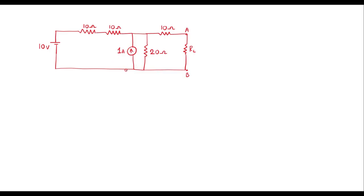Thevenin's equivalent circuit is always calculated at the terminals where the load resistor is connected. Here, the load resistor is connected at terminal A and B. To find Thevenin's equivalent circuit, first we need to remove this load resistor. Once we remove this load resistor, terminal A and B will become open. To calculate Thevenin's equivalent circuit, we need to calculate two parameters: Thevenin's voltage known as VTH, and Thevenin's resistance represented as RTH.